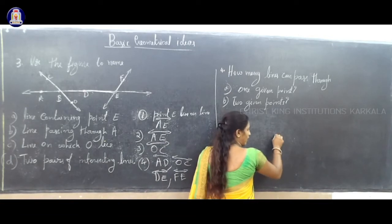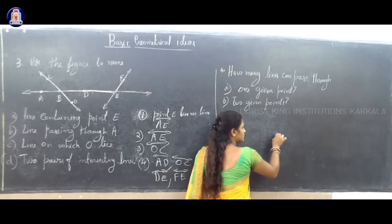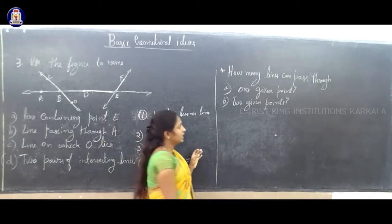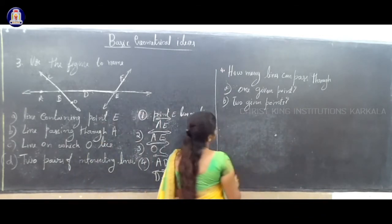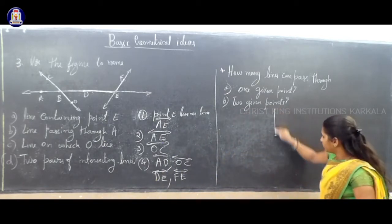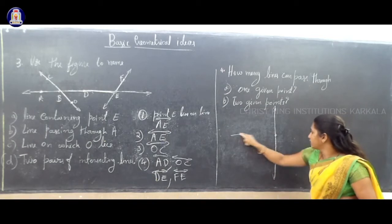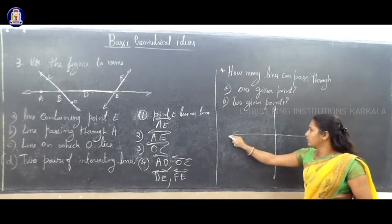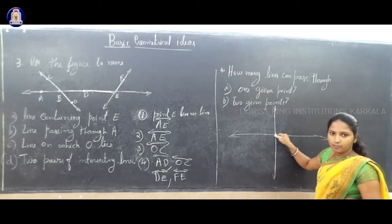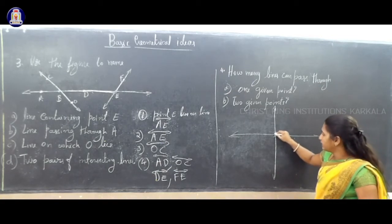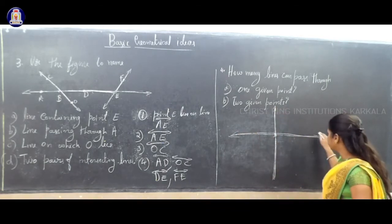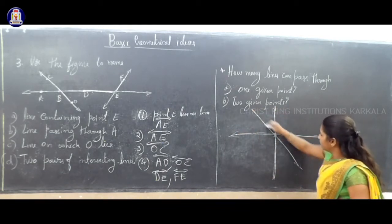If they give one point, only one point — how many lines can be drawn? How many lines can pass through one given point? If I draw one line vertically, I can draw another one horizontally. So these two lines are passing through the same point — only one point.